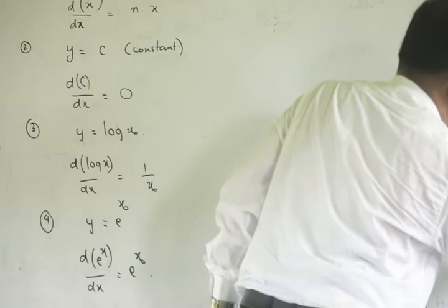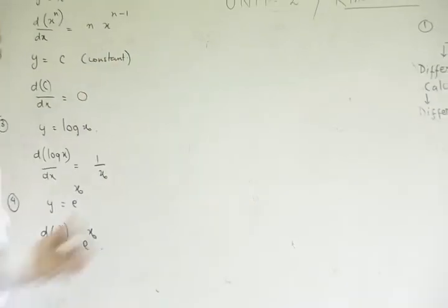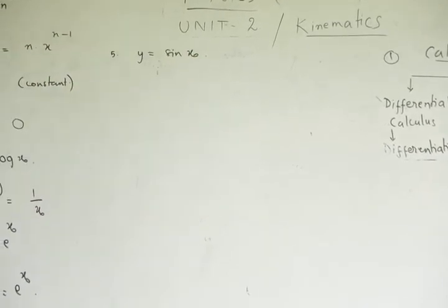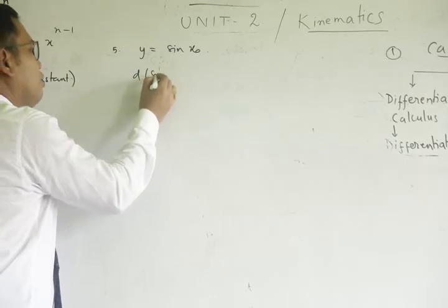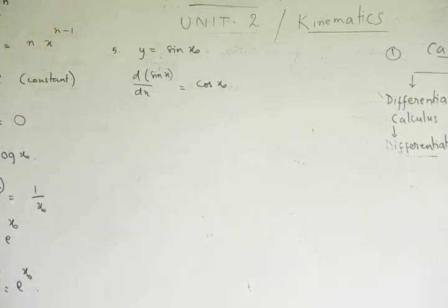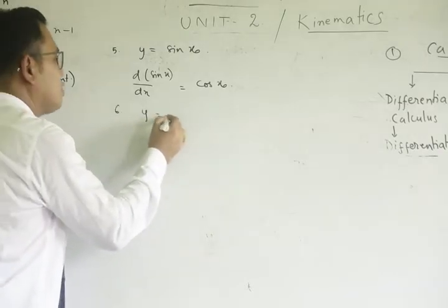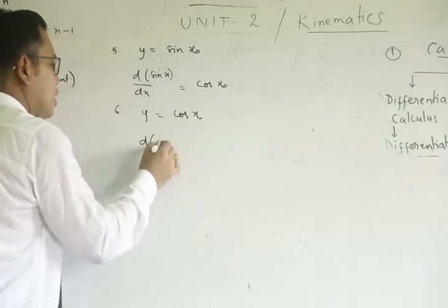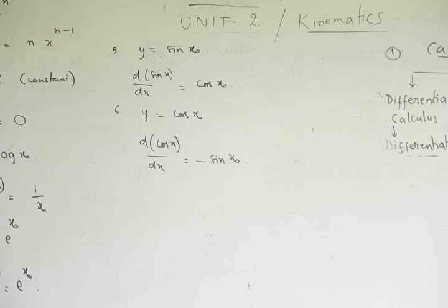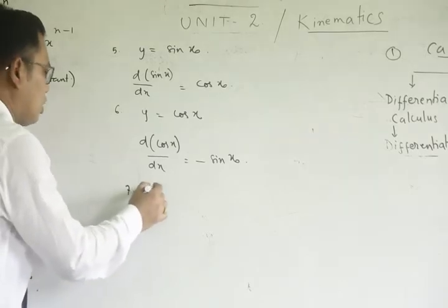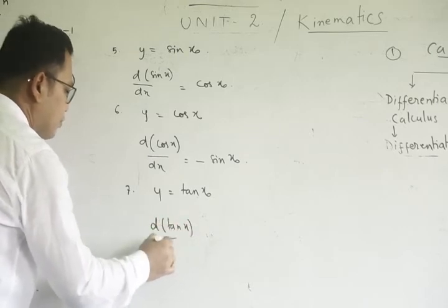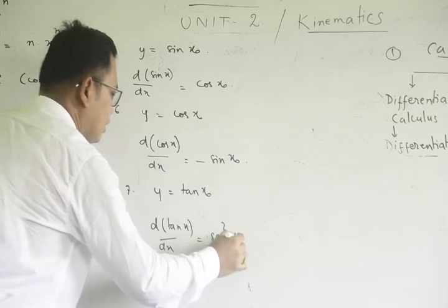Next, trigonometric functions. If y equals sin of x, then the derivative of sin x with respect to x is cos x. Number 6: if y equals cos of x, then the derivative of cos x with respect to x is minus sin x. If y equals tan x, the derivative of tan x with respect to x is sec squared x.